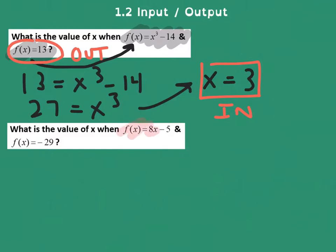Similarly, let's look. Here's our function. Here's the answer to that function. So if we were to do this problem, we would say negative 29 equals 8x minus 5. We move the 5 over to the other side to get negative 24 equals 8x and x equals negative 3.